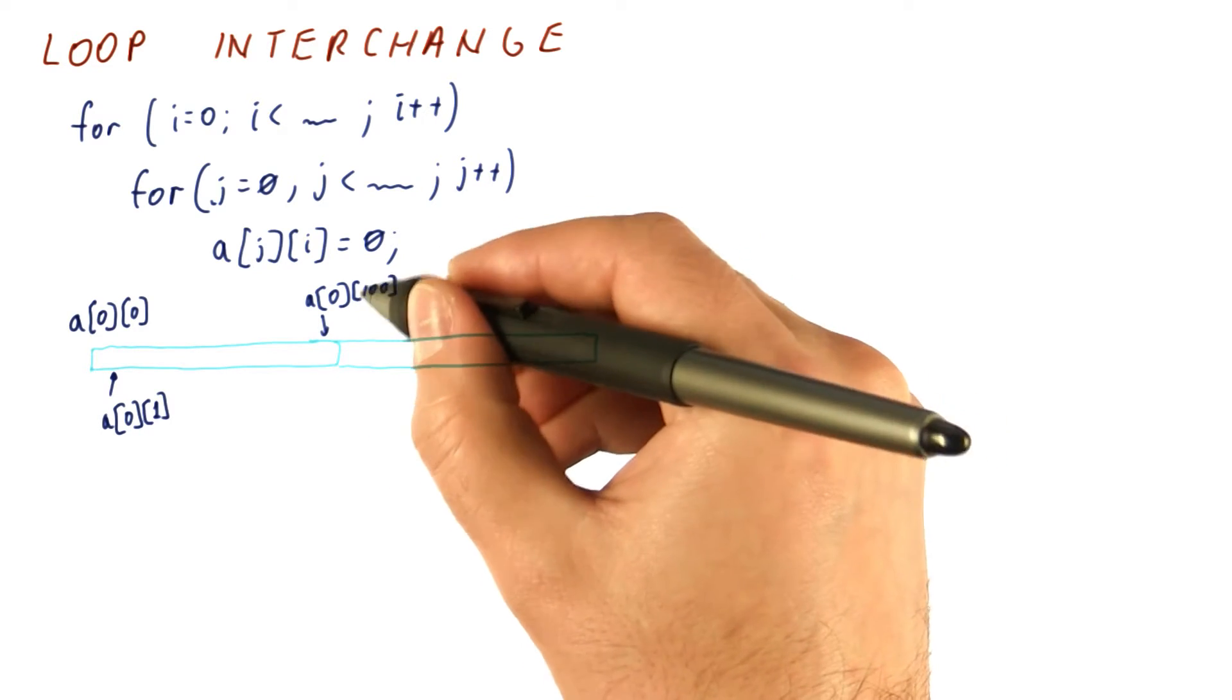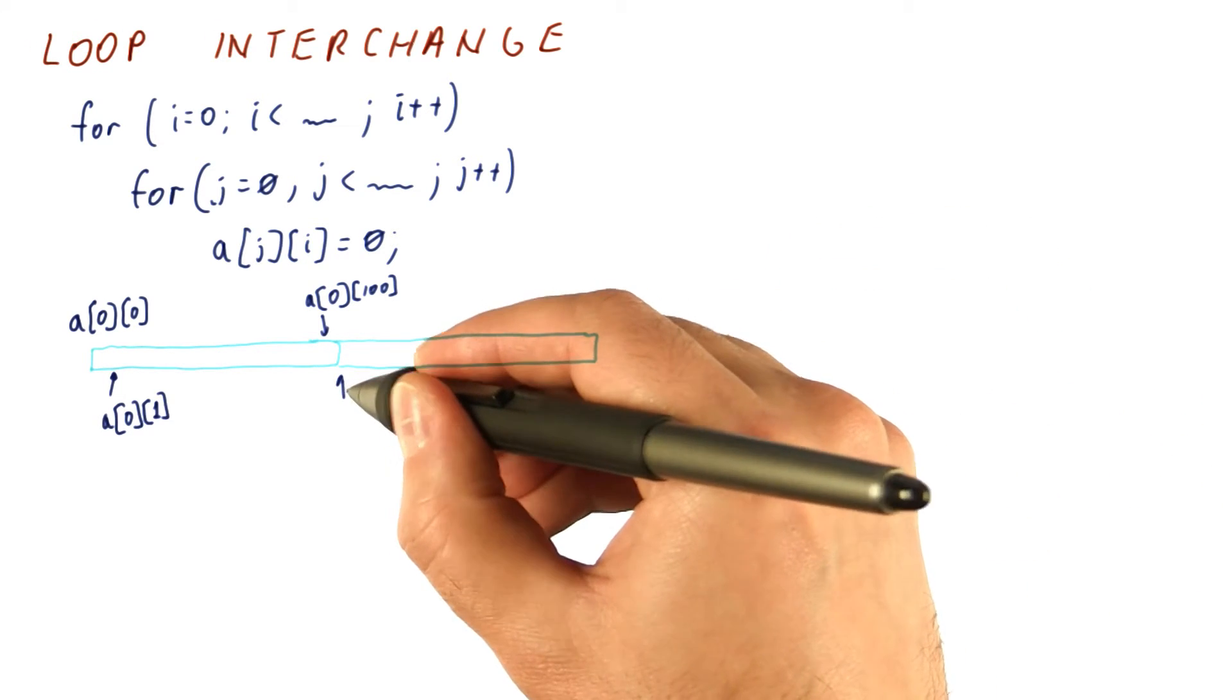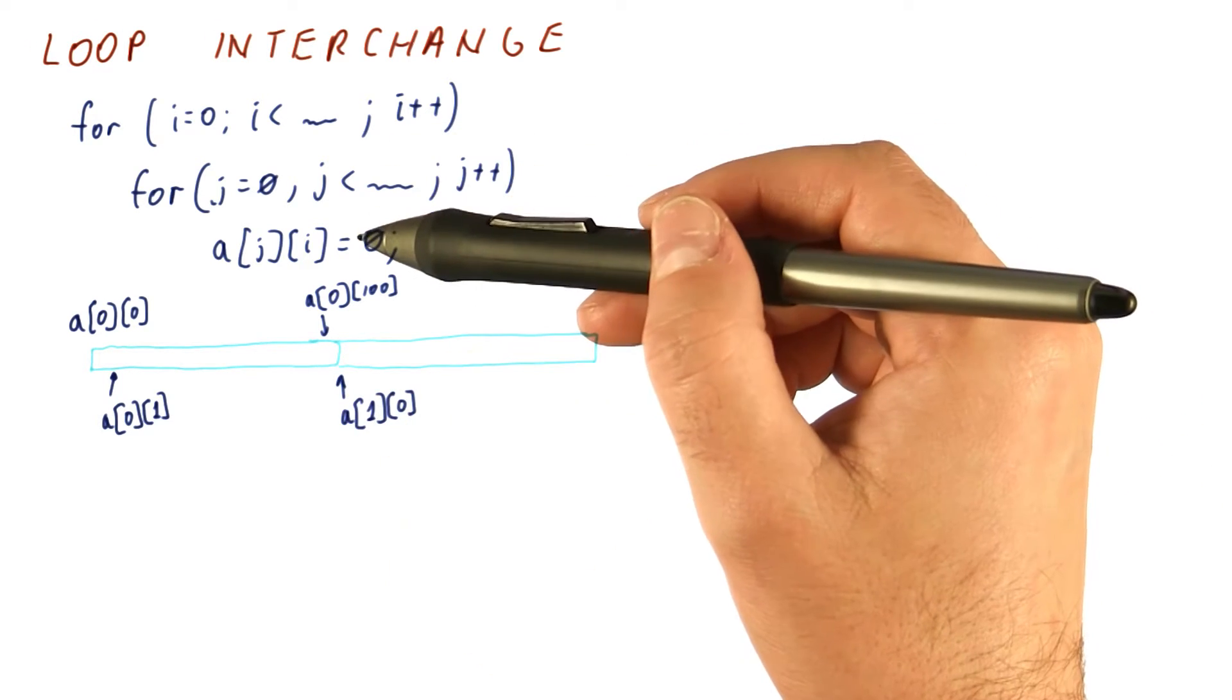The next element in memory will be A01, and so on. Eventually we have the last element of this row, and only then we will have A1,0, and so on.